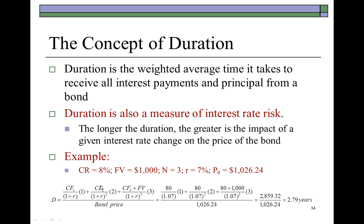The weight for the second period is the present value of the second coupon payment divided by the price, and the weight for the third and final period is the present value of the last coupon payment plus the bond face value, divided by price. So it is indeed the weighted average time at which each of the cash flows is received. This calculus enables us to capture the impact of interest rate risk: the longer the duration of an asset, the greater is the impact of a given interest rate change on the price of that asset. So if bond A has a duration of two years and bond B has a duration of two and a half years, bond B would react more adversely to a given interest rate change.